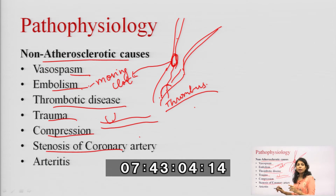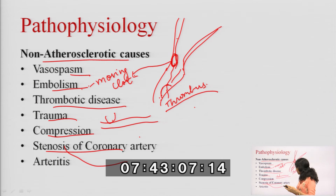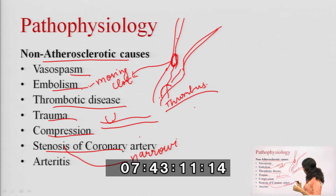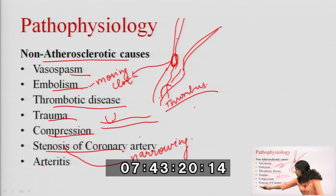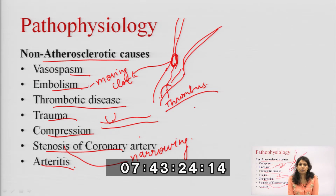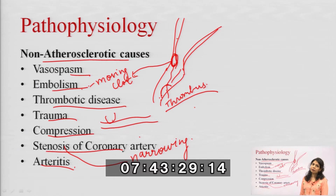Stenosis of the coronary artery — narrowing of the coronary artery — may sometimes happen and result in ischemic heart disease. Arteritis, that is inflammation of the arteries, may also lead to ischemic heart disease.